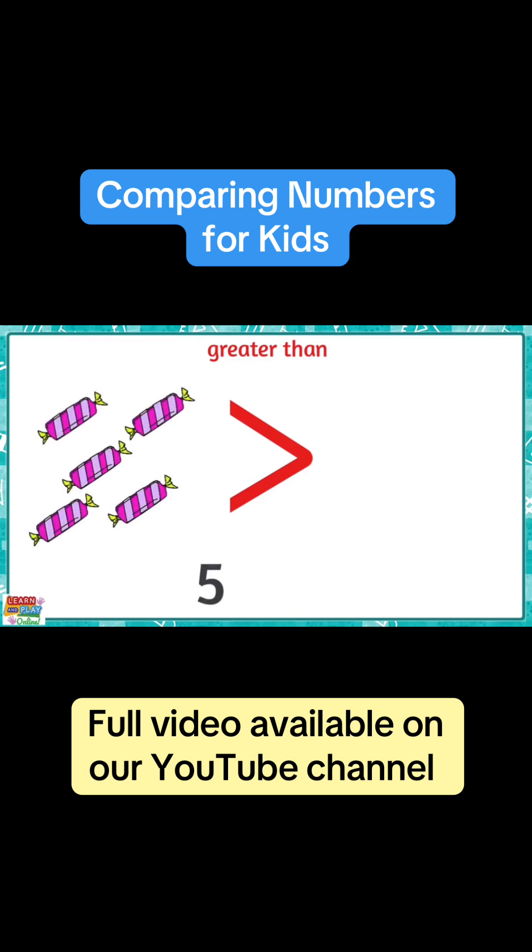For example, there are five lollies on this side and only three lollies on this side. We can see that the number five is greater than the number three.